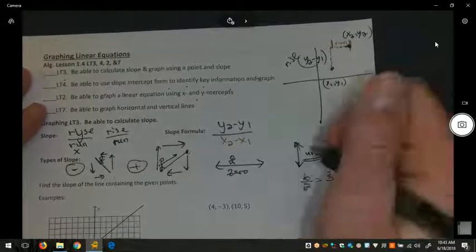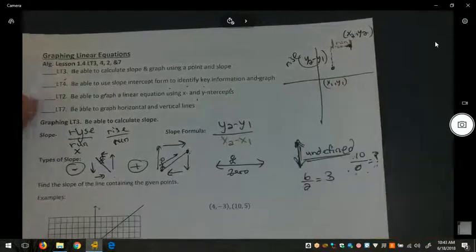Mathematically, it's undefined. And in terms of visually, the slope is undefined when we see a vertical line.